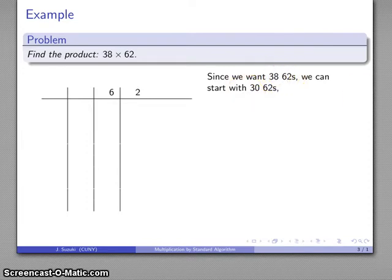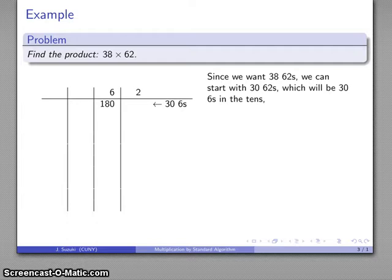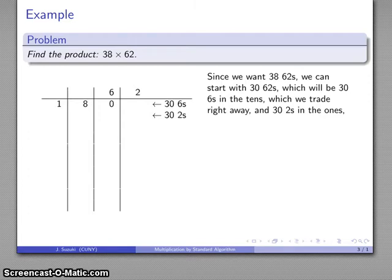That's 30 sixes in the tens place. That's 180, and I should bundle and trade as I go along, so that 180 becomes 18 in the next place. I'll bundle and trade, and there's my 30 sixes. And likewise I'm going to need 30 twos, so that's 30 twos here. So all together that's going to be 60, and again I'll do the bundle and trade.